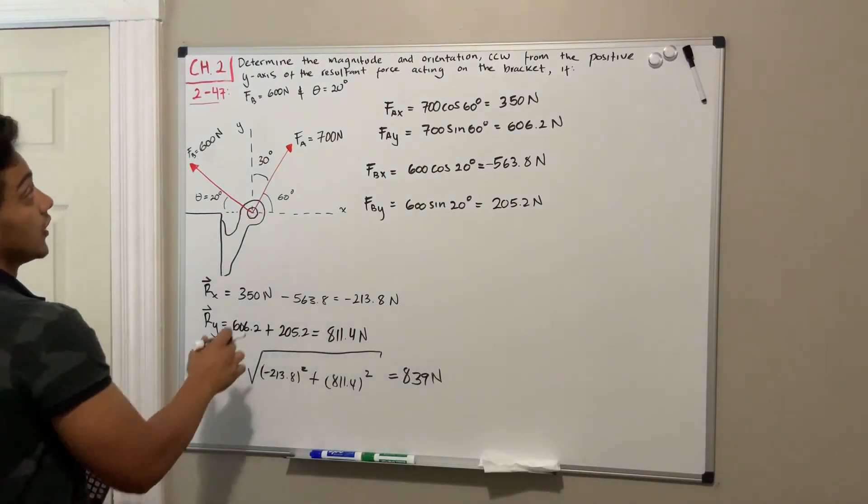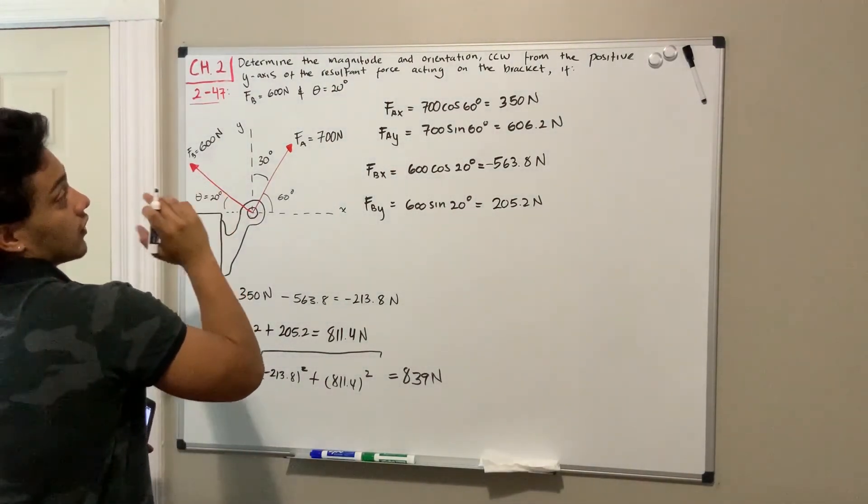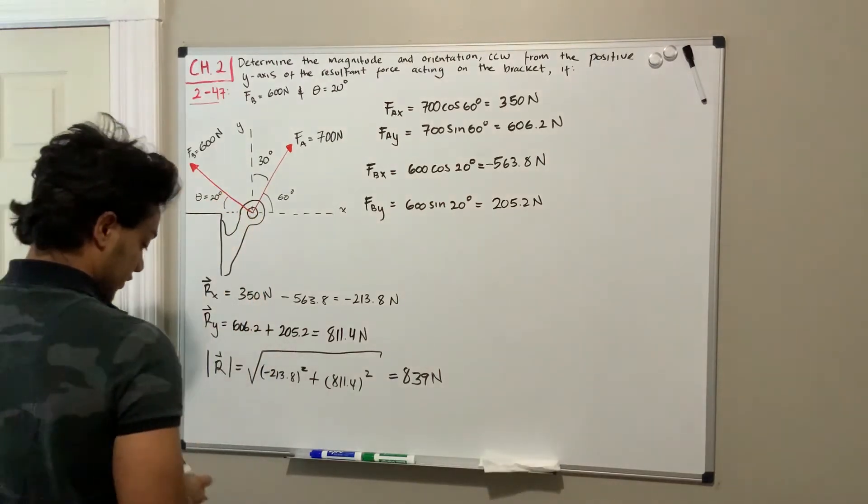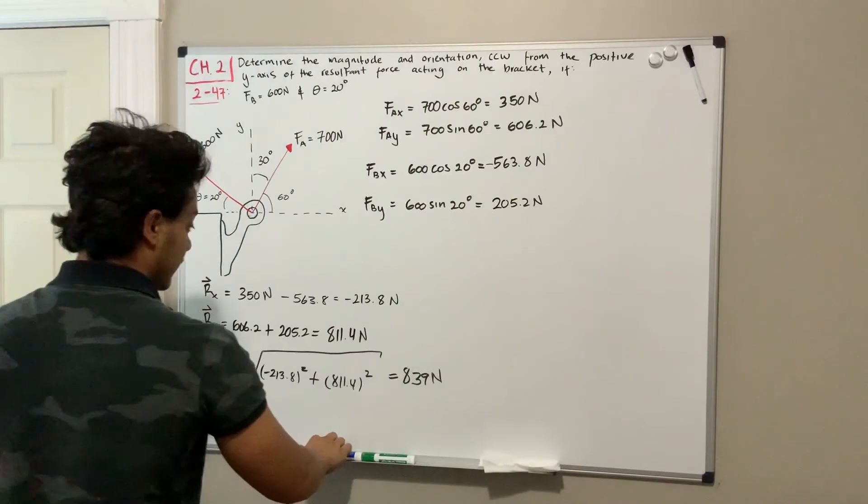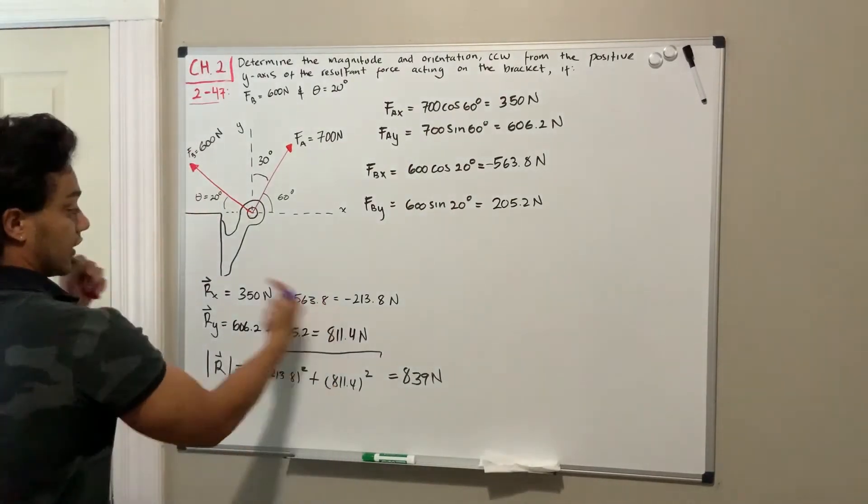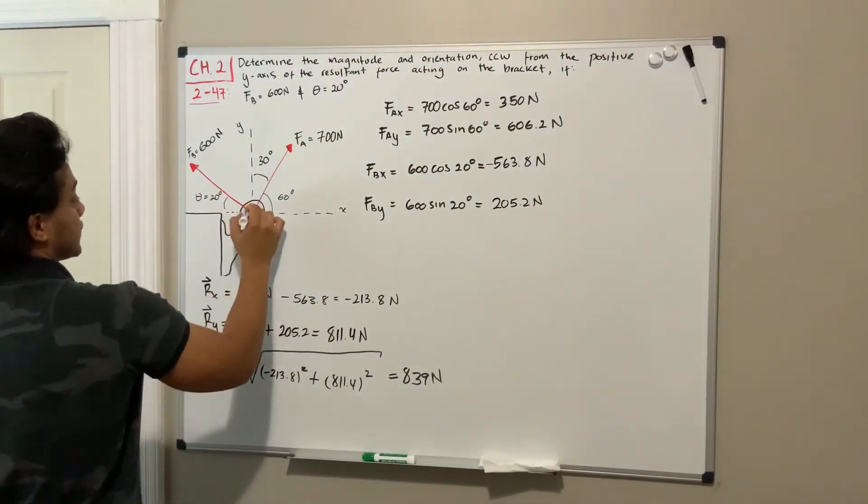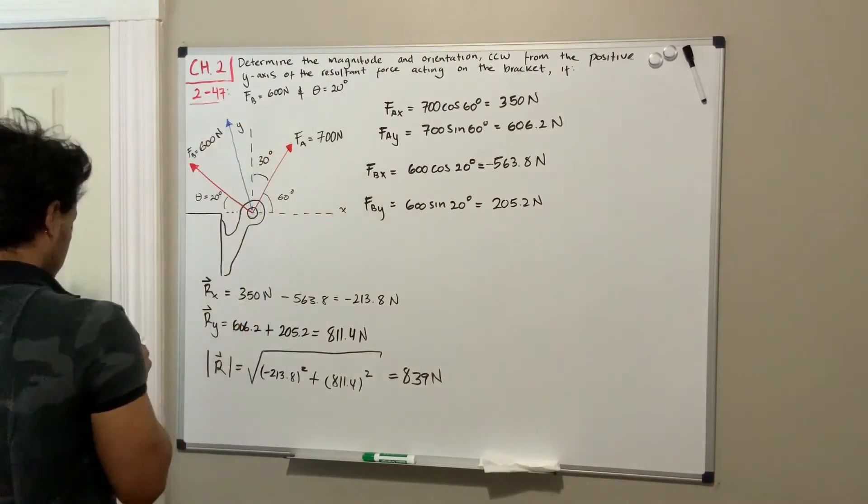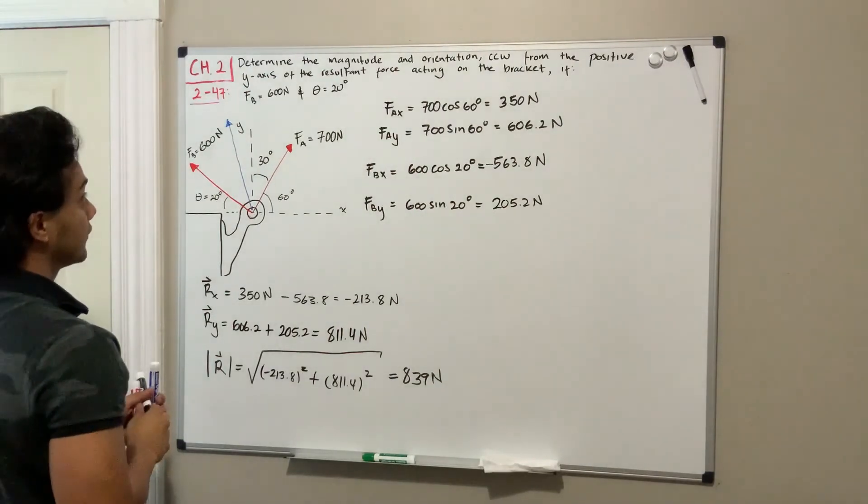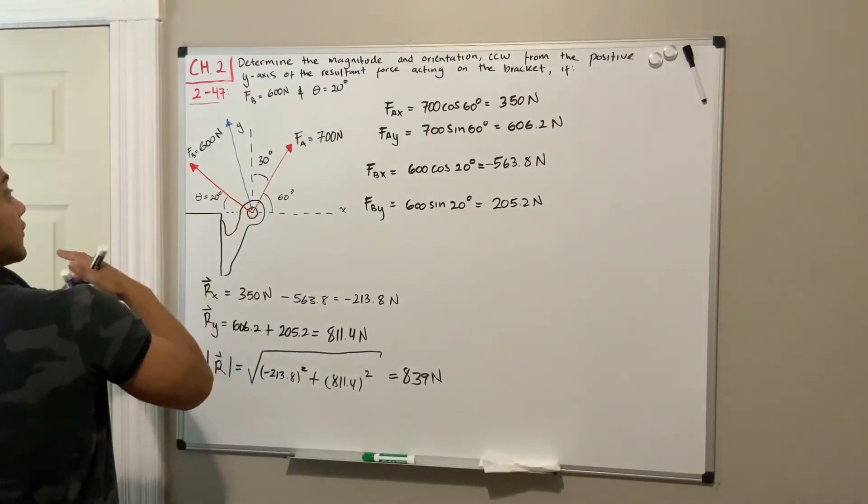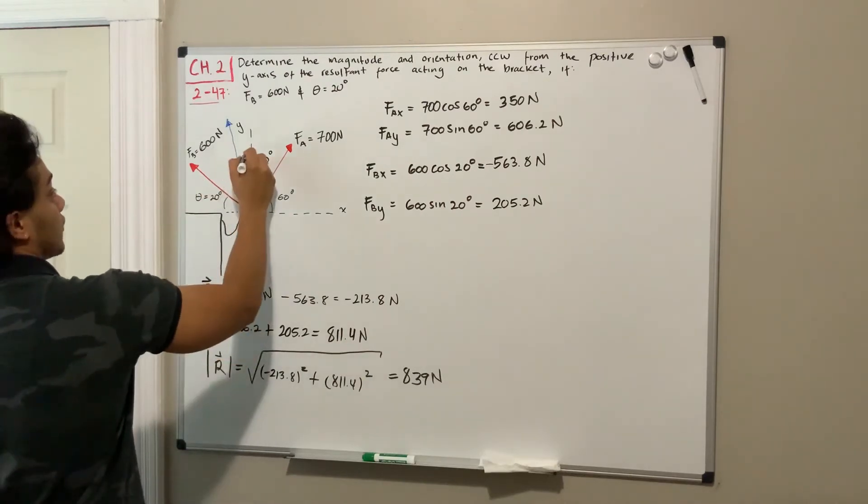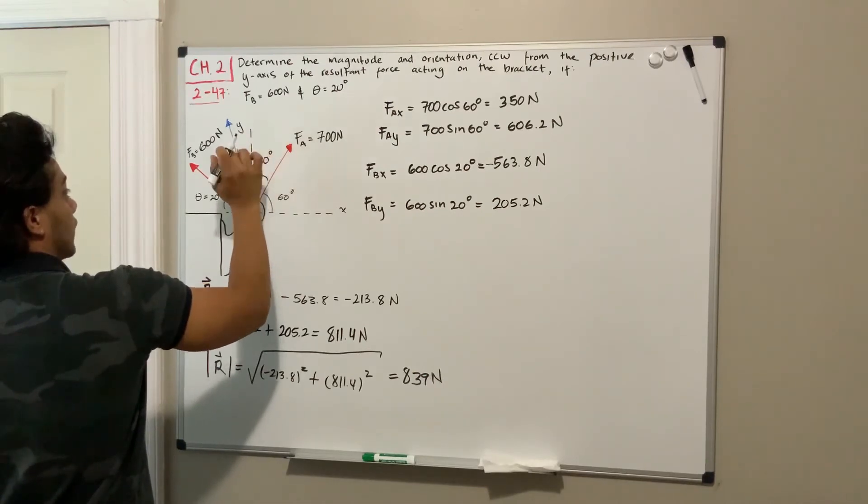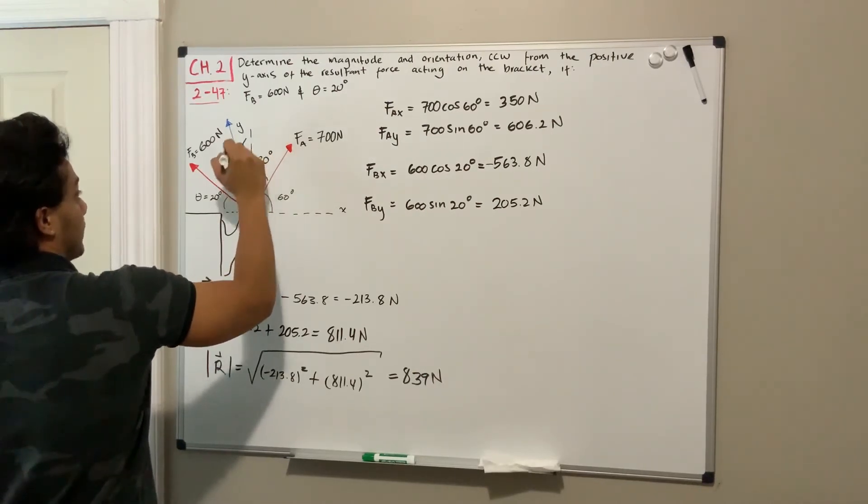Okay, so we found the magnitude. We need to find its direction and they want it counterclockwise from the positive y-axis. So let's draw first the resultant. The resultant is going to have a direction that is to the left and up, so it's probably something like this. And they want us to find the angle that goes counterclockwise from the y-axis, so this angle over here we're going to call gamma.